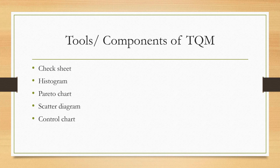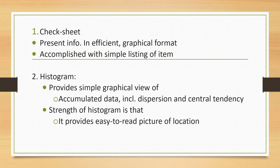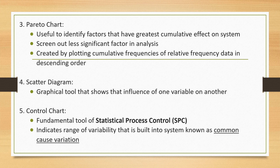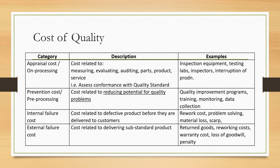Tools and components of TQM include: check sheet, histogram, Pareto chart, scatter diagram, and control chart. A check sheet presents information in an efficient and graphic format, accomplished with a simple listing of items. A histogram provides a simple graphical view of accumulated data including dispersion and central tendency. A Pareto chart identifies factors with the highest cumulative effects on the system. A scatter diagram shows the influence of one variable on another. A control chart is the fundamental tool of Statistical Process Control (SPC), indicating the range of variability built into the system as common cause variation.